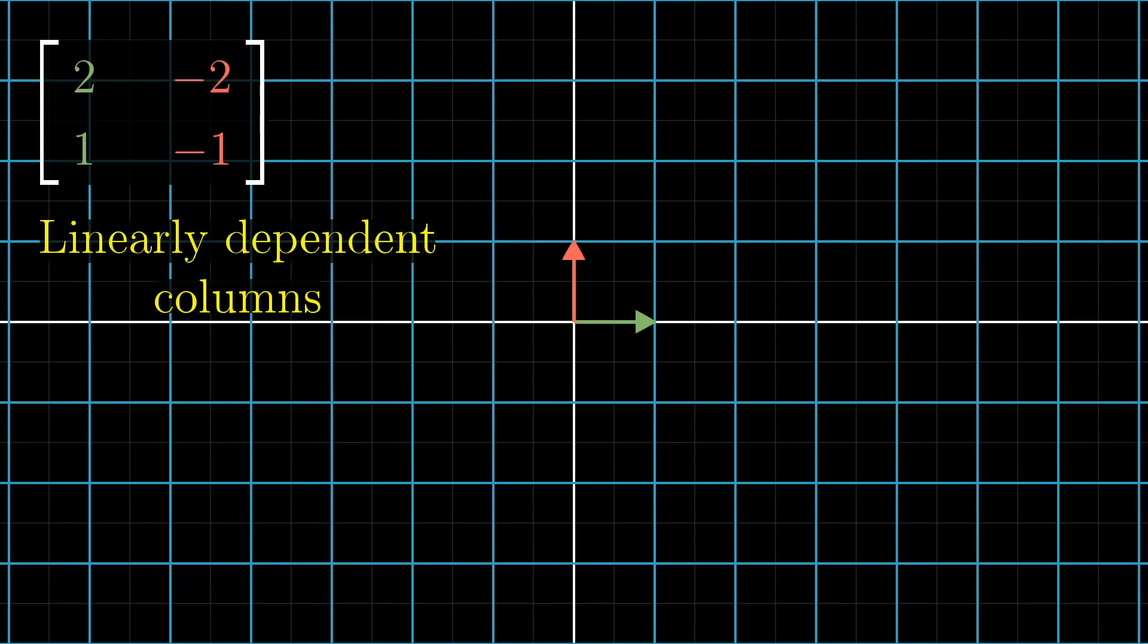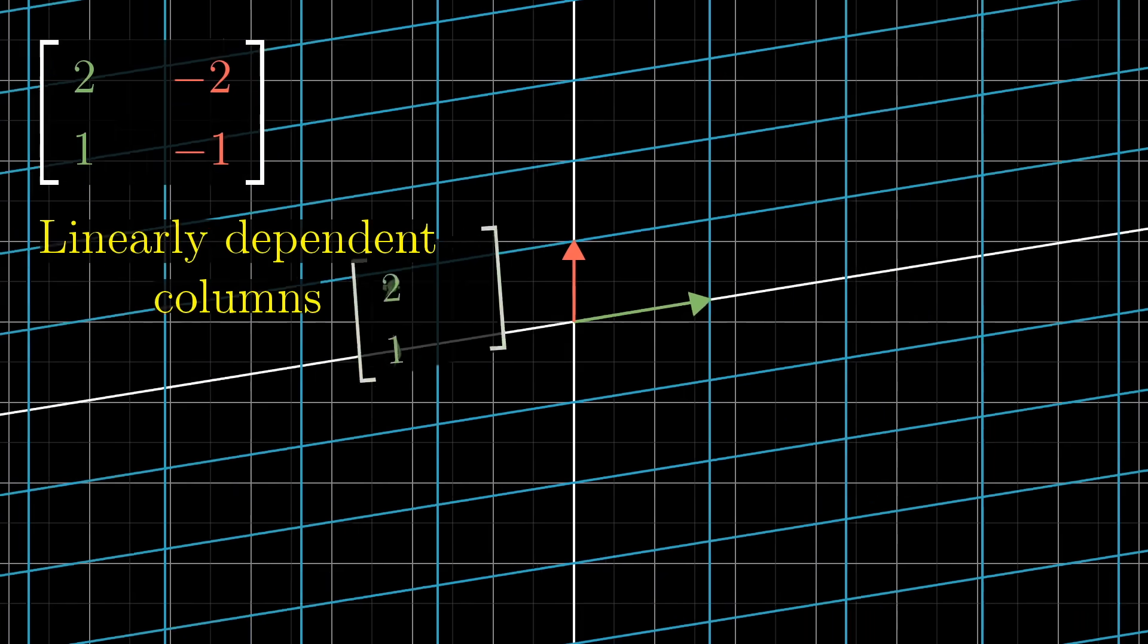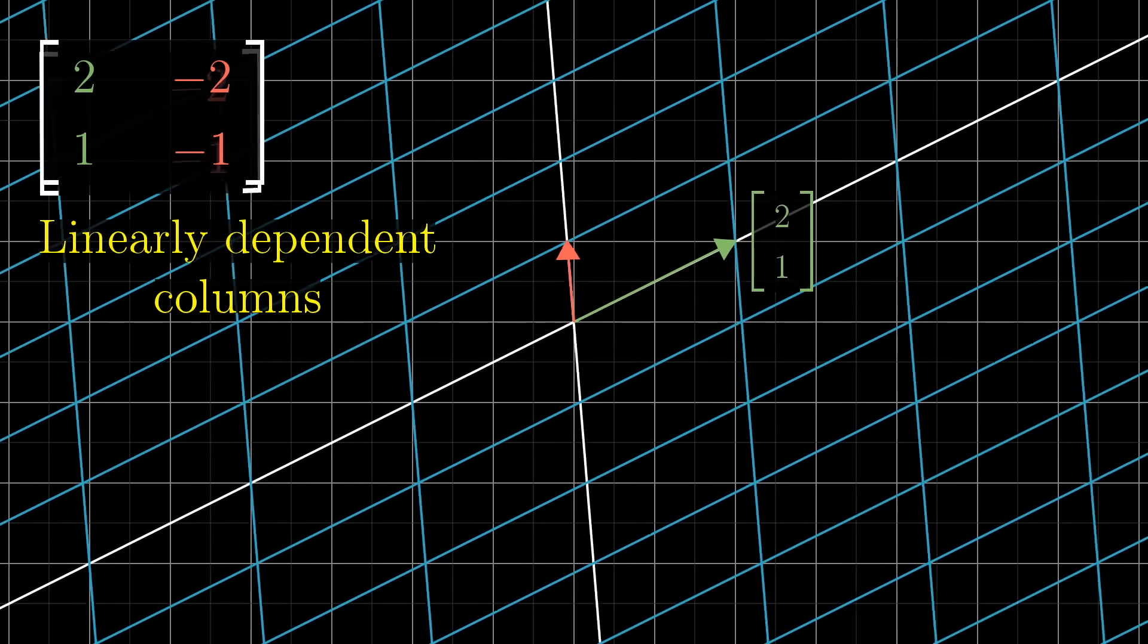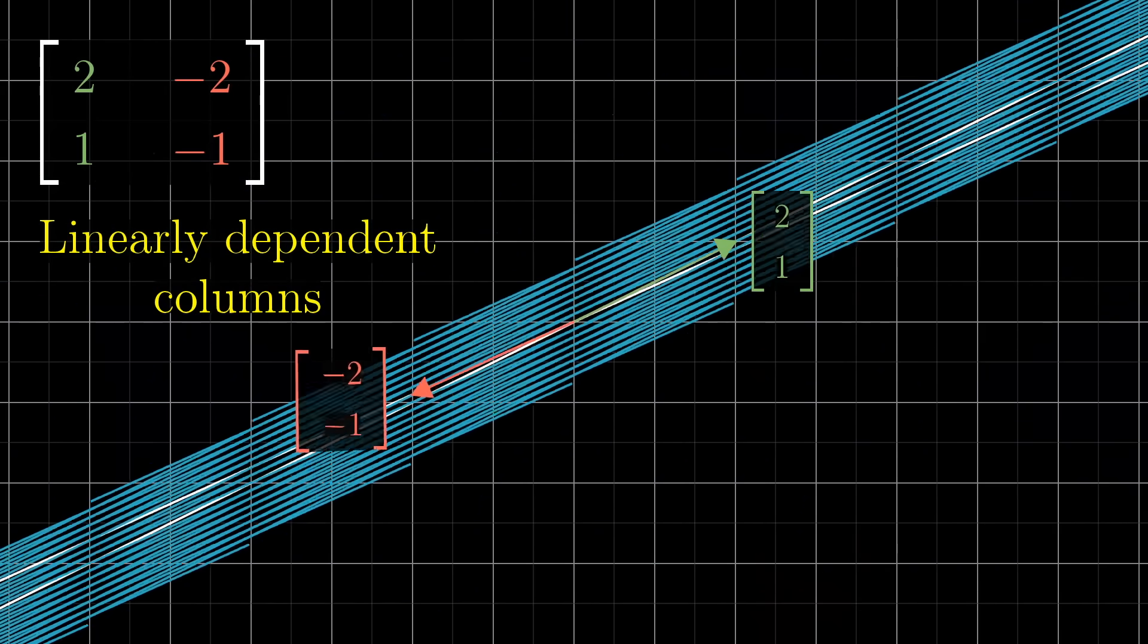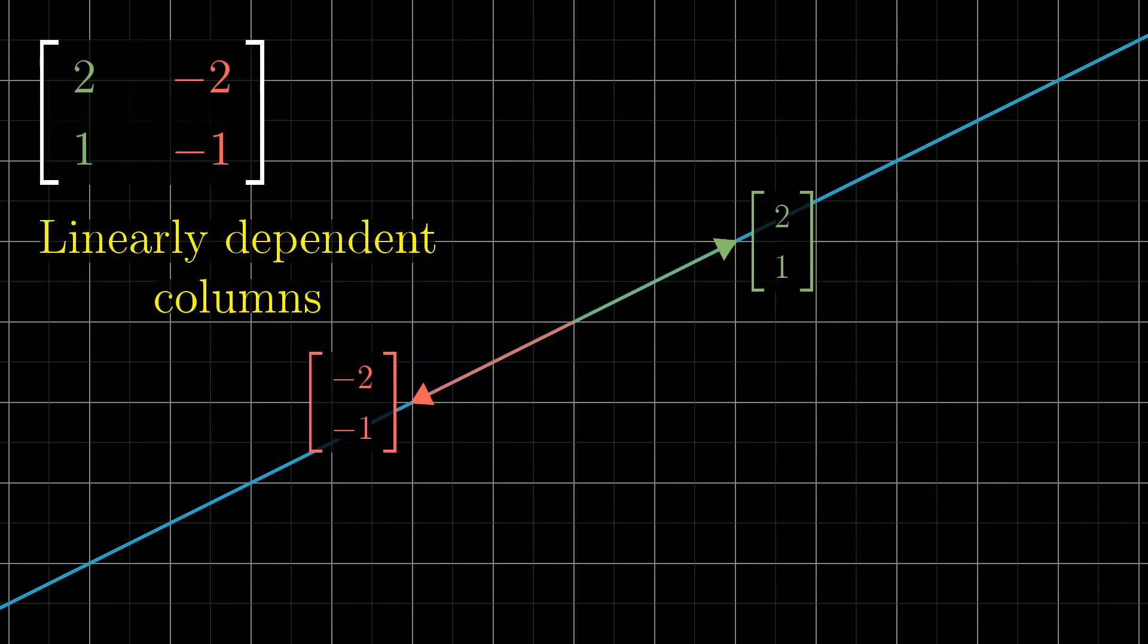If the vectors that i-hat and j-hat land on are linearly dependent, which, if you recall from last video, means that one is a scaled version of the other, it means that the linear transformation squishes all of 2D space onto the line where those two vectors sit, also known as the one-dimensional span of those two linearly dependent vectors.